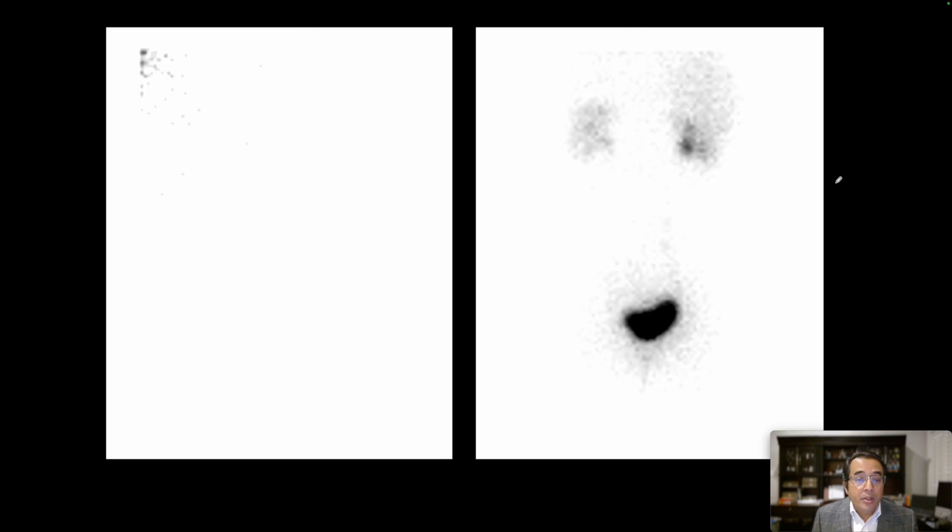Our next slide is showing dynamic images from a renal scan using technetium 99M MAG-3. So we frequently use MAG-3 renal scan, especially to evaluate patients with obstruction. We're looking for any focus of stasis.